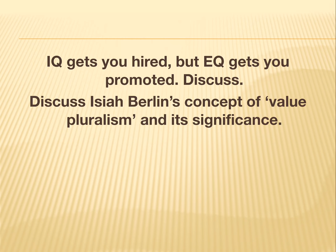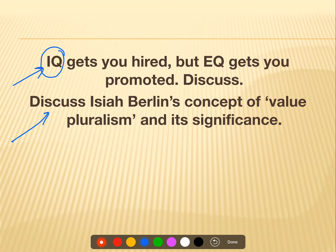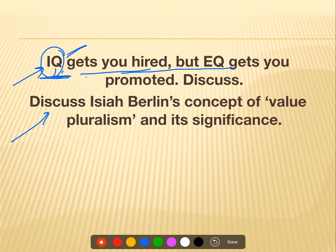The first question is: 'IQ gets you hired.' IQ, what is intelligence quotient? You need a basic level of intelligence to get a particular job. IQ's work is enough to get hired, but if you don't have competence, skills, or a knowledge base, you cannot get a particular job. The emotional quotient — how you manage your emotions — is what gives you success and promotions. So: IQ gets you hired, but EQ gets you promoted. Discuss.